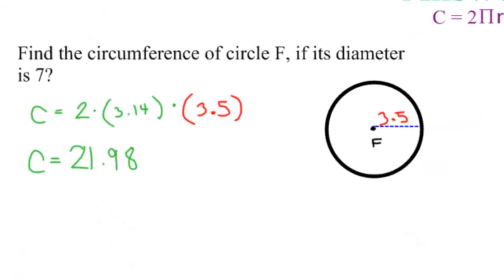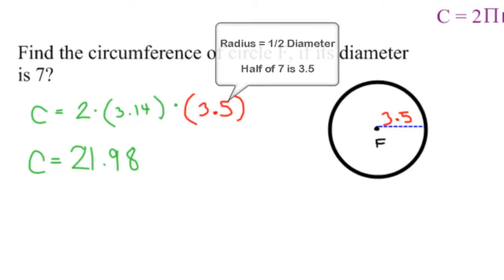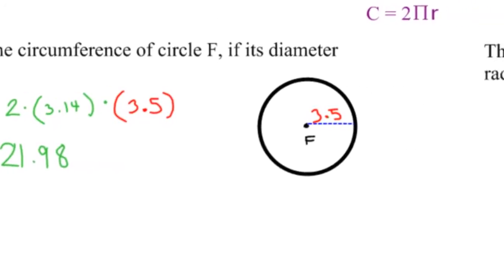For the first example, find the circumference of circle F if its diameter is 7. We need a radius for the first example, so if the diameter is 7, then the radius is 3.5. Calculate it from there and you get 21.98.